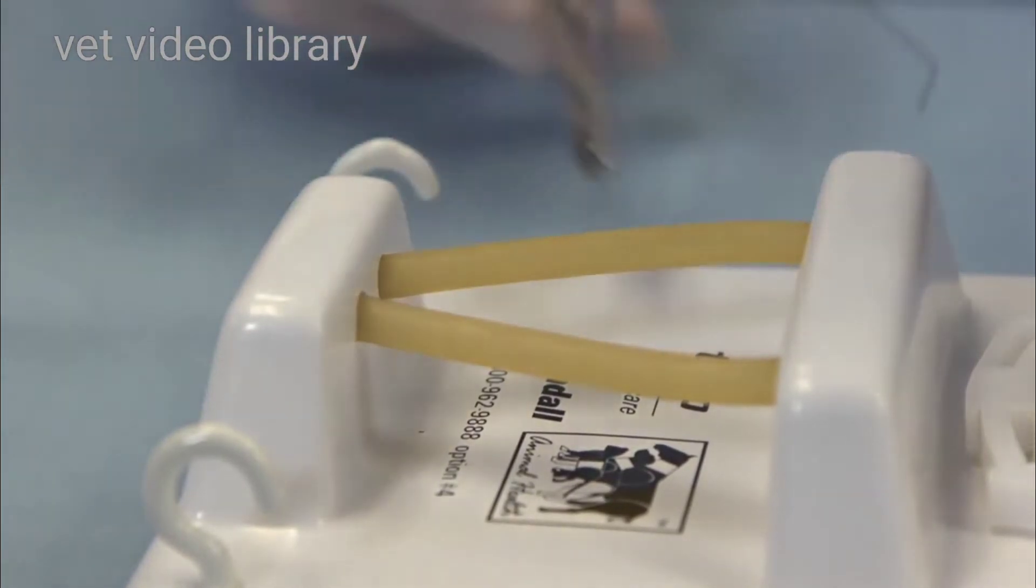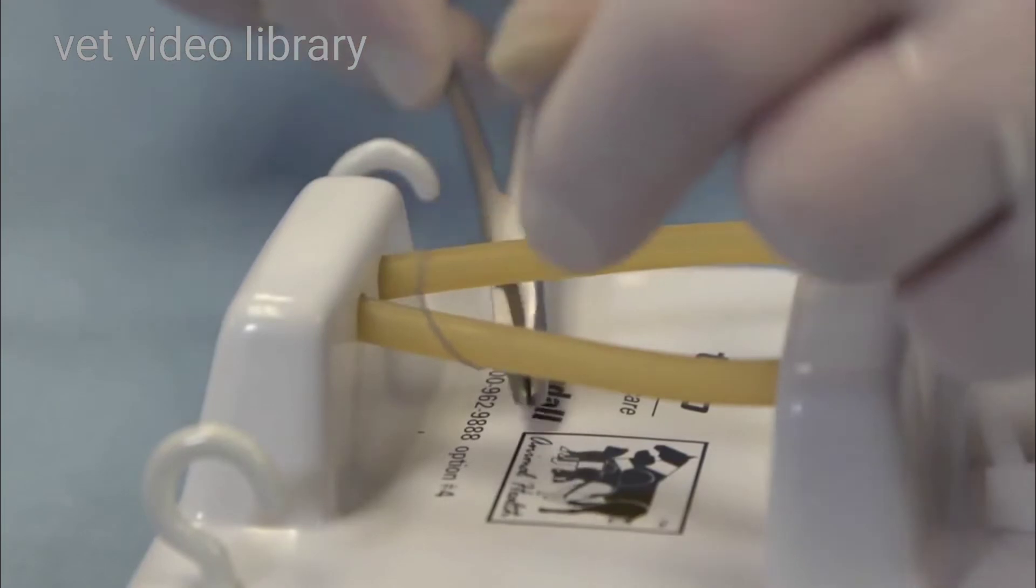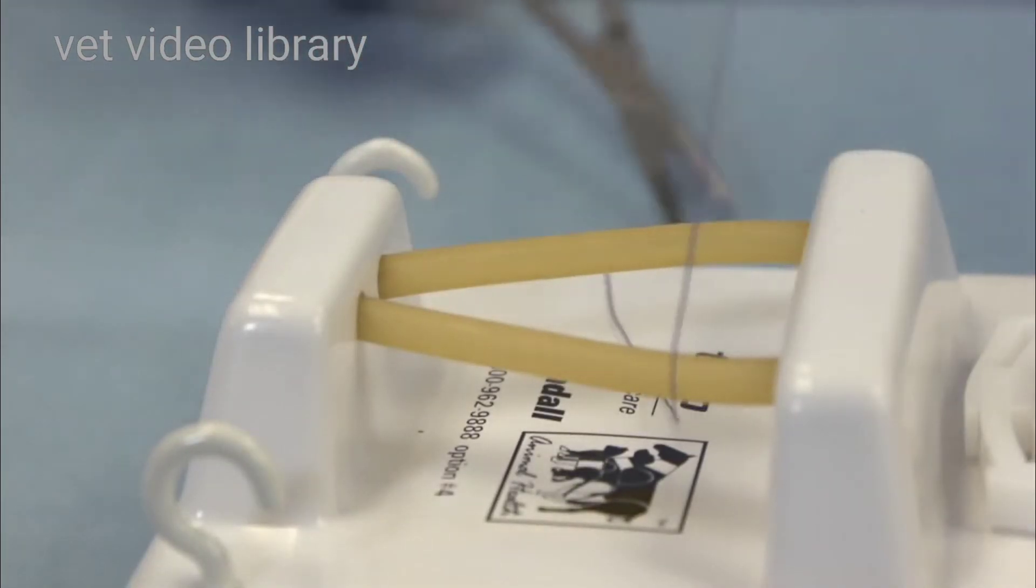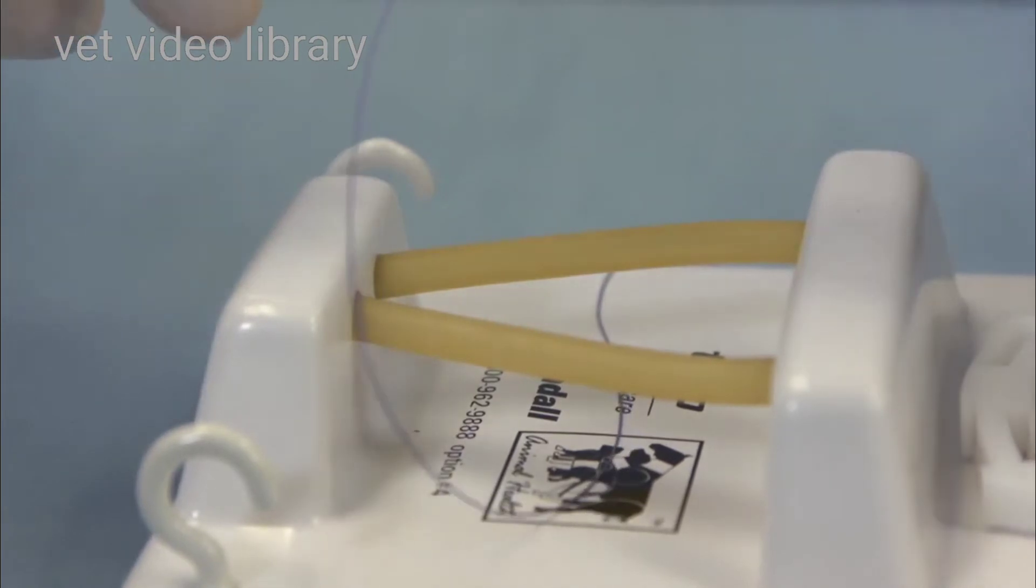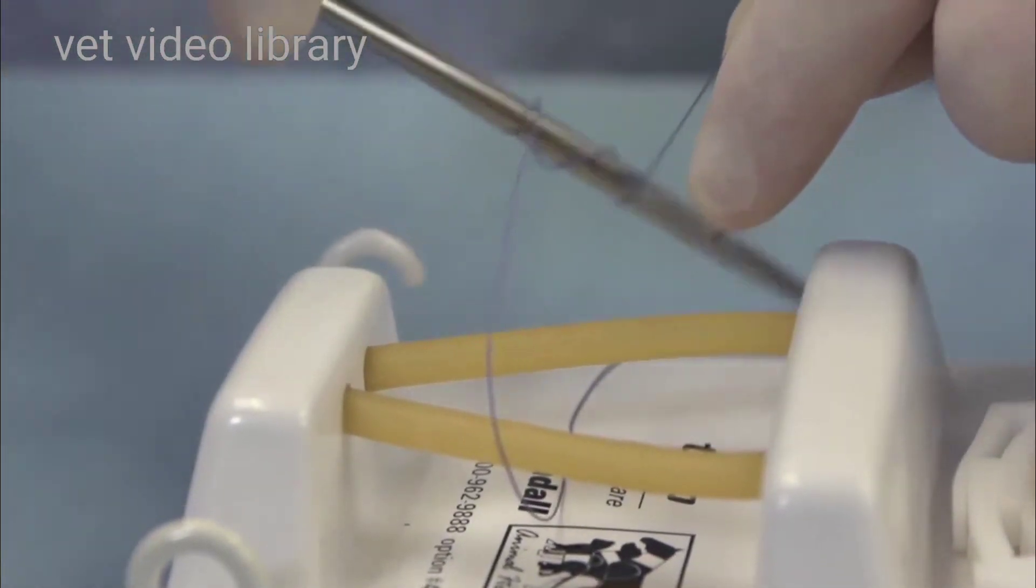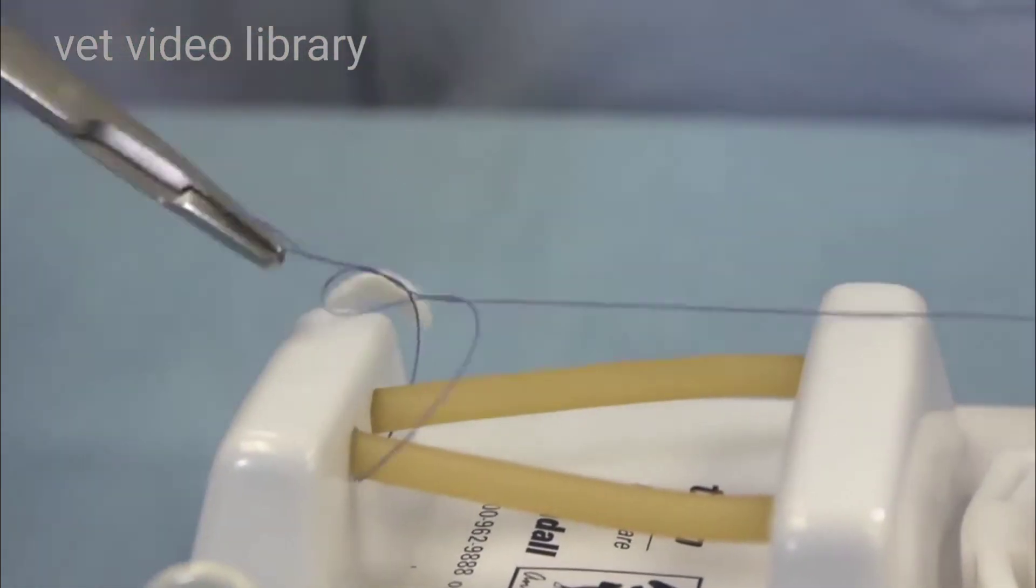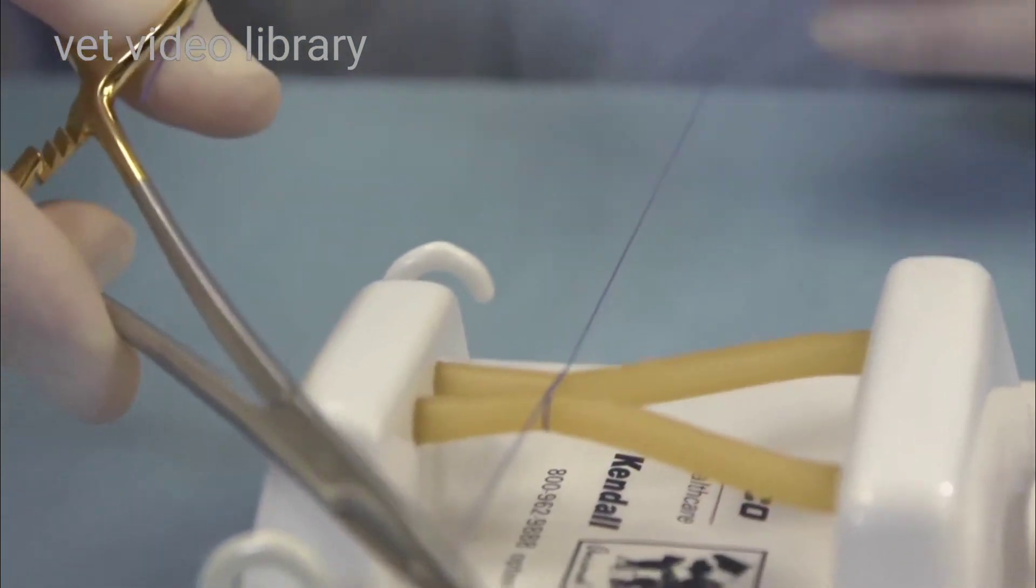Sometimes a surgeon's throw or a surgeon's knot will work. So with a surgeon's knot, we wrap the suture around the needle holder twice and we cinch it down.